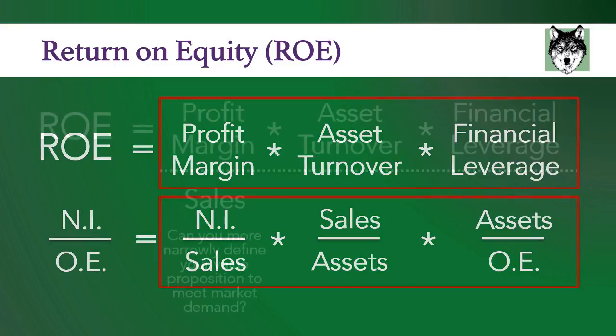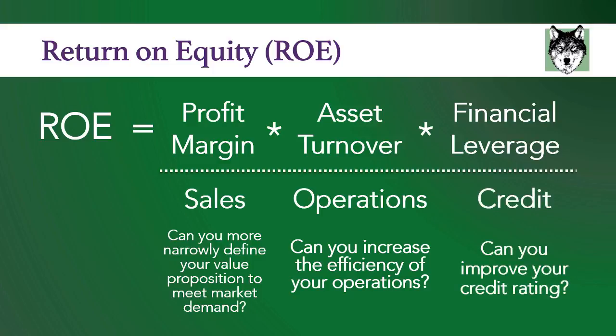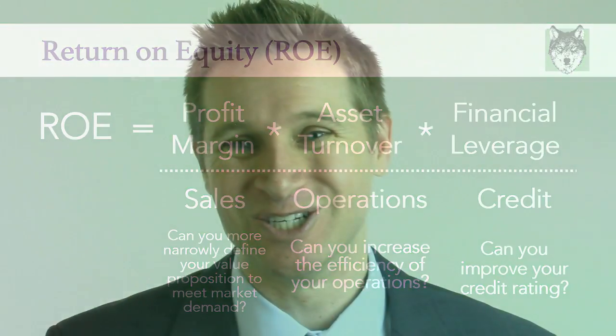Let me give you some examples. Profit margin is driven by sales, so you can ask: can you more narrowly define your value proposition to meet market demand? Asset turnover is driven by operations — can you increase the efficiency of your operations? Financial leverage is driven by your credit — can you improve your credit rating? This equation is allowing you to understand what is driving your return on equity and showing where you have opportunity to improve.